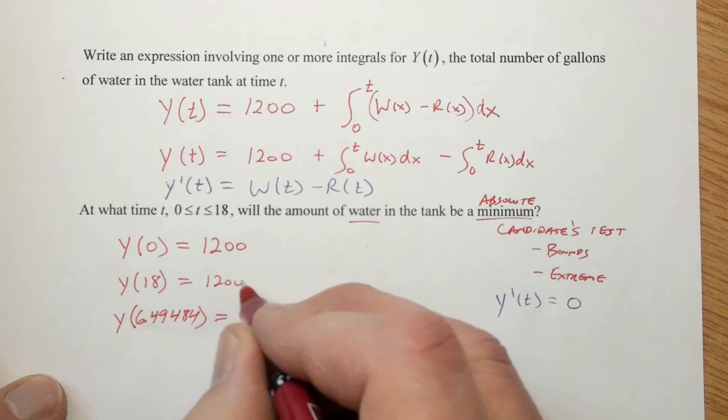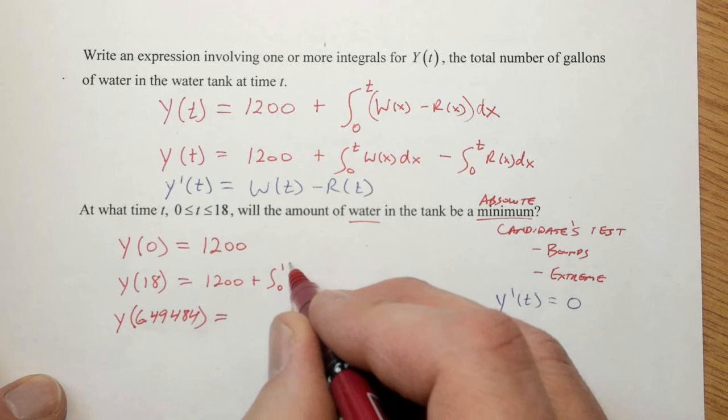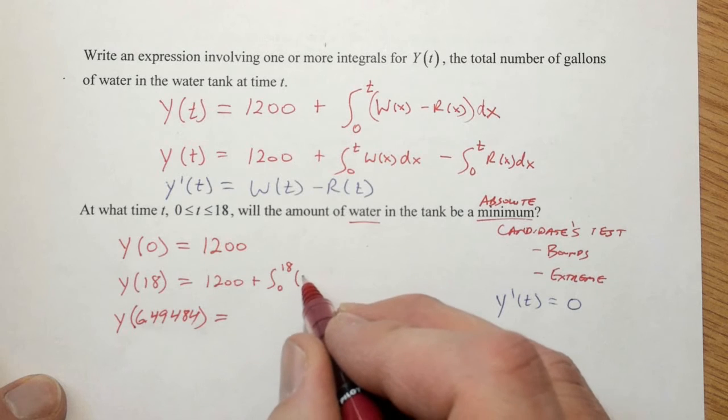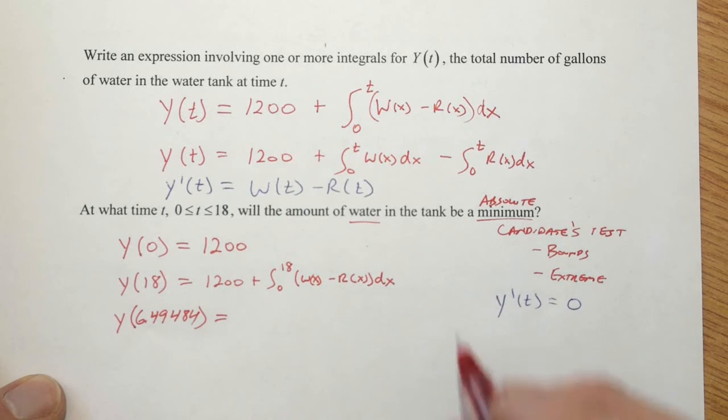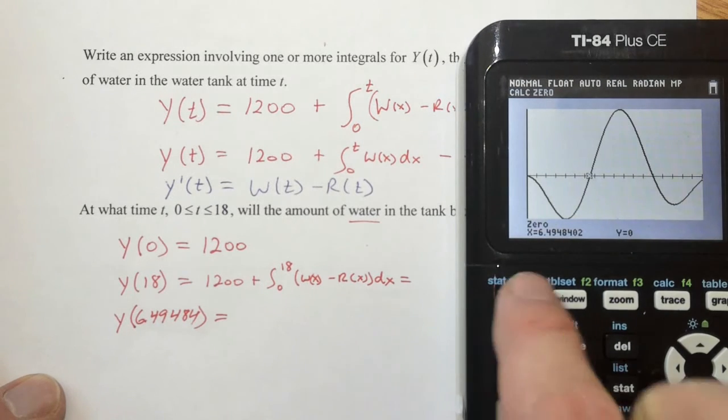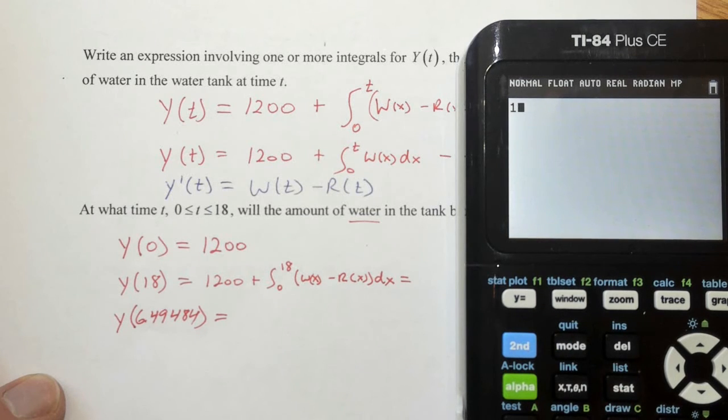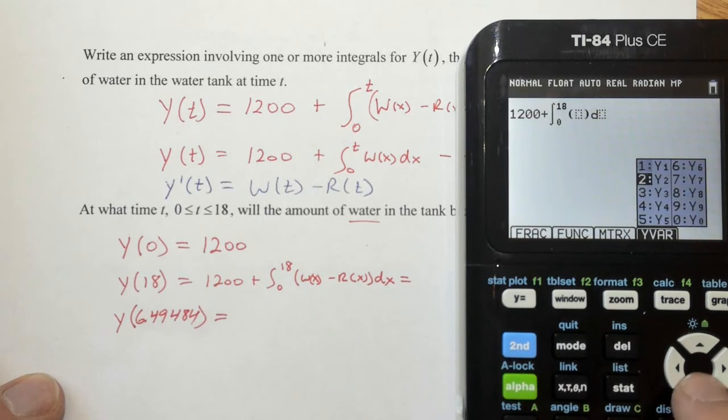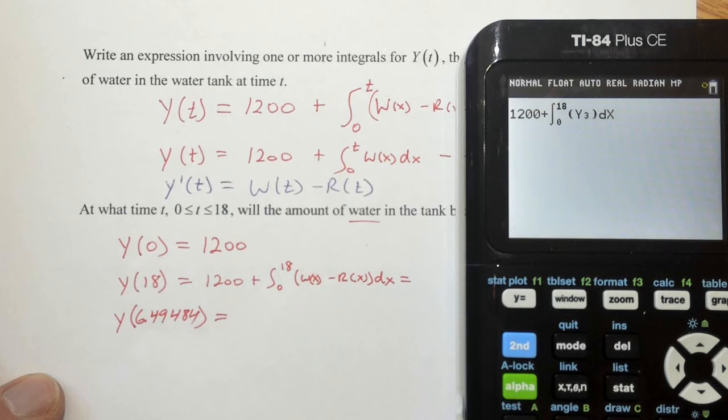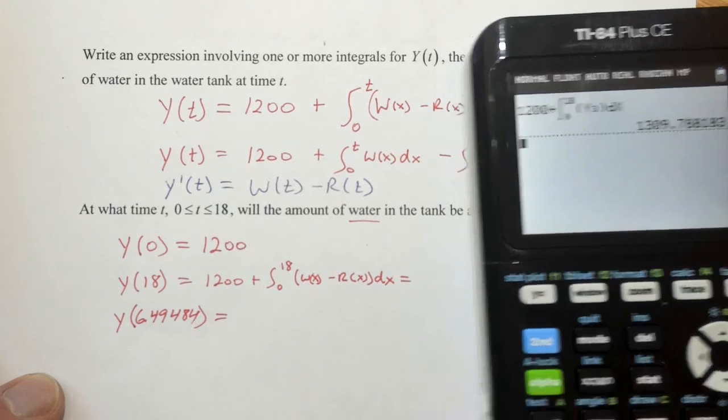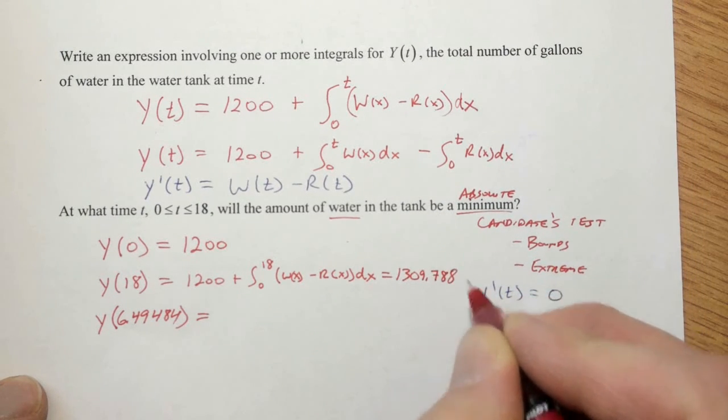Now, for Y(18), this will be 1,200 plus the integral from zero to 18, because, again, we're replacing T with 18, of W(x) minus R(x) dx. All right, so let's let the calculator do the work there. Keep in mind that W(x) minus R(x), that's my Y3. So I'm going to go back to my main screen, and I'm going to do 1,200 plus math 9, going from zero to 18. And, again, you could put Y1 minus Y2 here. Because Y3 is equal to Y1 minus Y2, I'm just going to put in Y3. So alpha trace Y3, and then dx. It's going to think for a couple moments, because there's a lot of calculations with those trig functions going on. And this answer, we see that's how much water is in the tank. All right, 1309.788. Keep in mind, we want to be accurate to three decimal places.